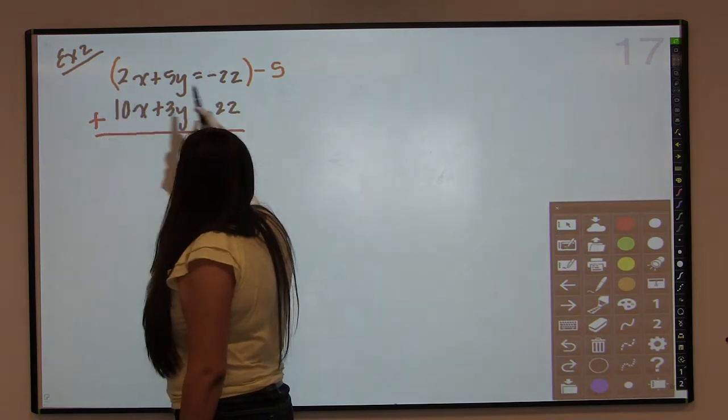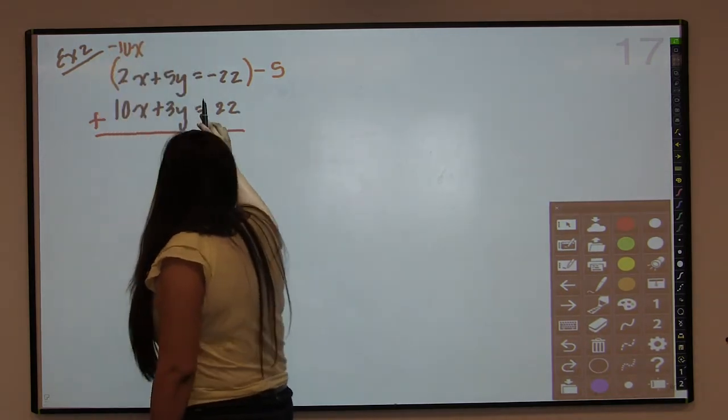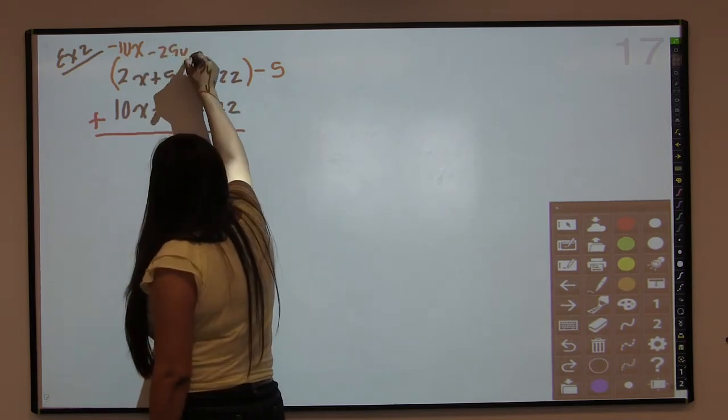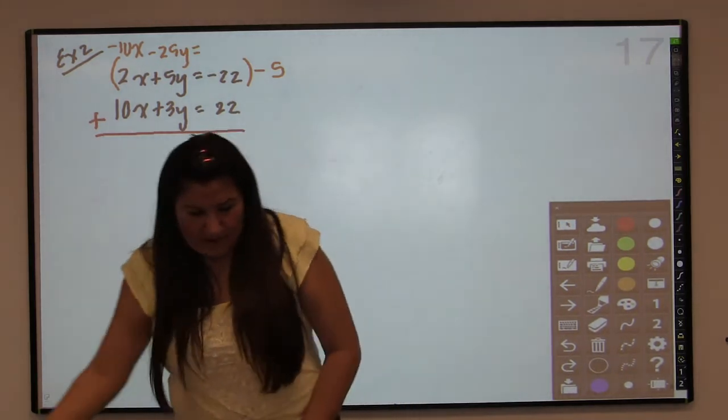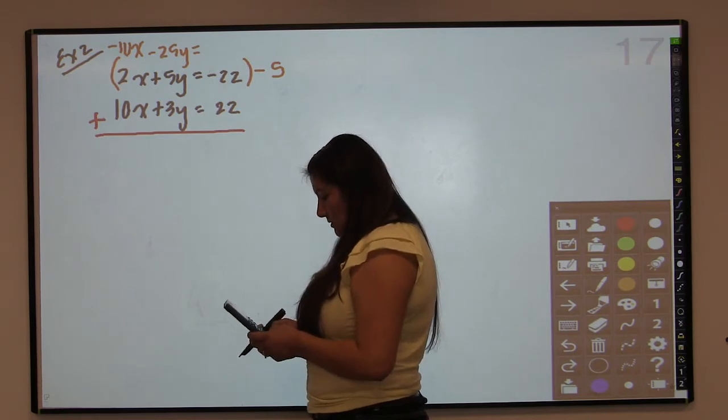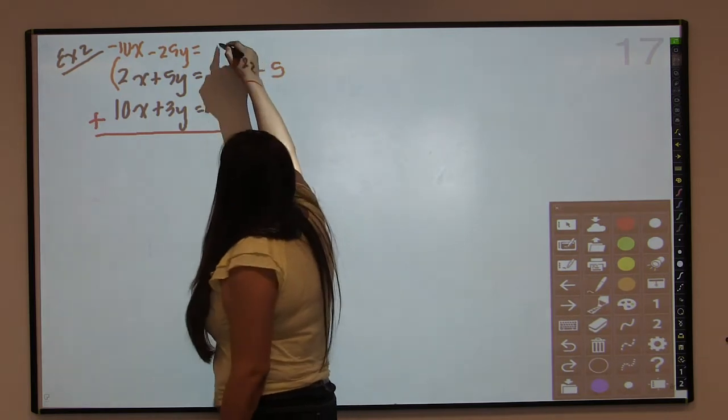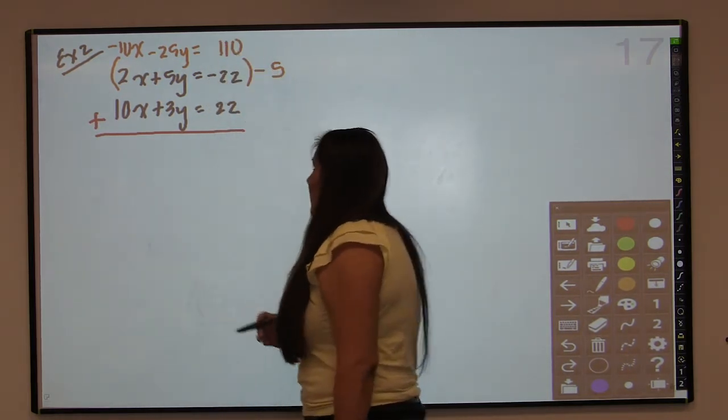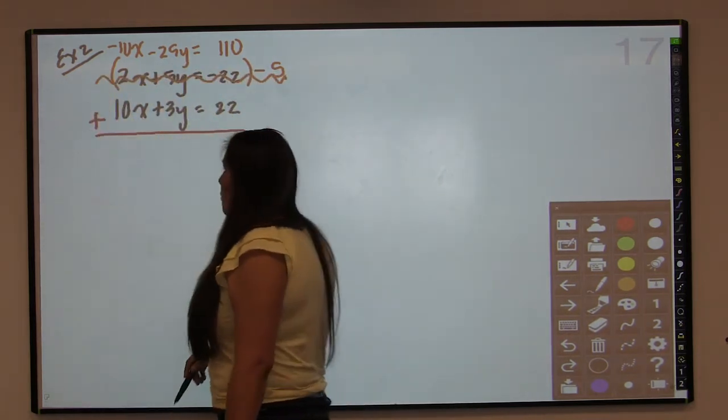And I'm going to go 2x times negative 5 is negative 10x, and then 5y times negative 5 is negative 25y, and negative 22 times negative 5 is positive 110. And so now this orange equation has replaced this equation, and I continue with my addition.